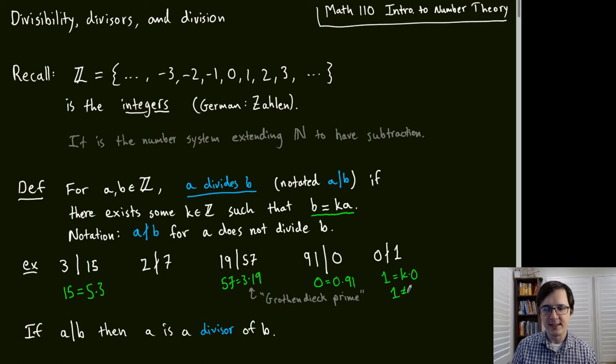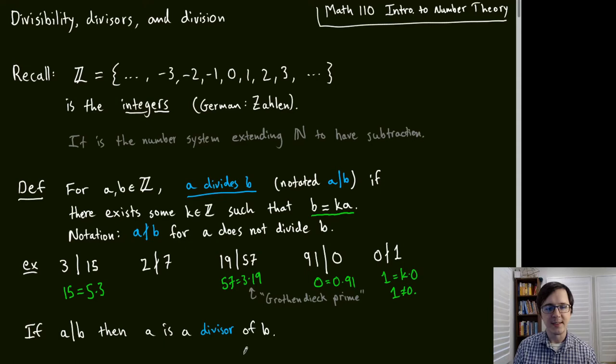Some terminology: if A divides B, then we say A is a divisor of B. We can speak of the set of all divisors of a number.